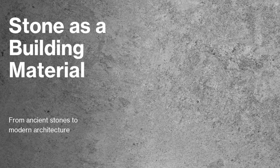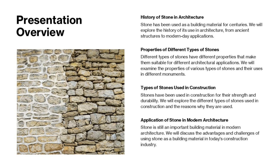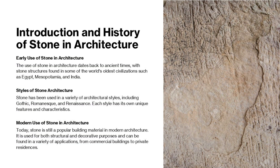Let us discuss about the stone material from the ancient era to the modern architecture times. We are going to be first discussing about the history of stone in architecture, exploring the ancient era wherein stones were used extensively. Then we will discuss different types of stones and their properties, how stones are used in construction and applications, and finally modern architecture using stone.